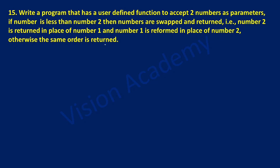Otherwise, the same order is returned. Let us begin with the function definition with the keyword def. I am going to write the name of the function as swap and take two parameters a and b, then put a colon as per the syntax of the function definition. With the indentation space, I am going to check the condition: if a is less than b. If this condition is true, then it has to return the swapped value, so we write return b, a.